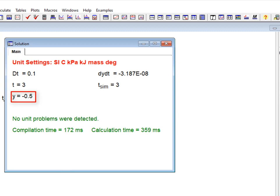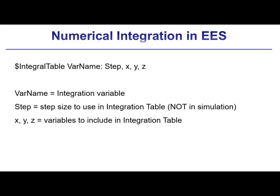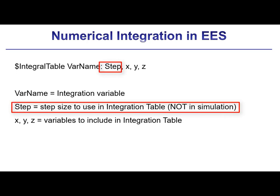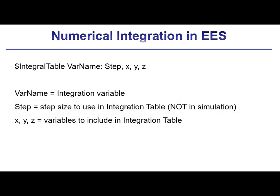It's usually interesting to know not just the final value of y, but actually the trajectory of the solution — what is y as a function of time during the process? This information can be recorded by including the dollar integral table directive. The format is: the integration variable var name, followed by a list of variables you want to keep track of. Optionally, a colon followed by a step value can be specified; if provided, the variables will be reported in the integral table at increments of the integration variable specified by that step. If you don't include that value, every single time step will be included in the integral table.